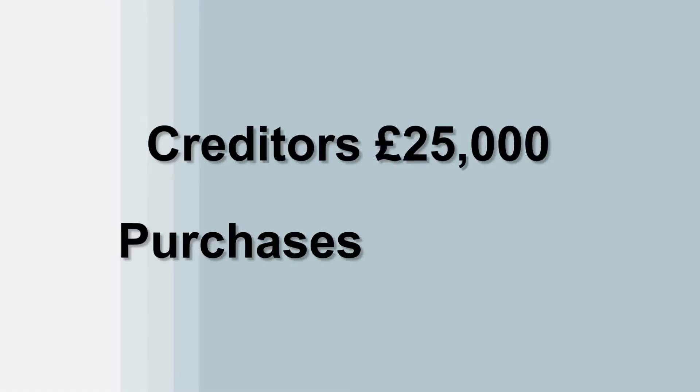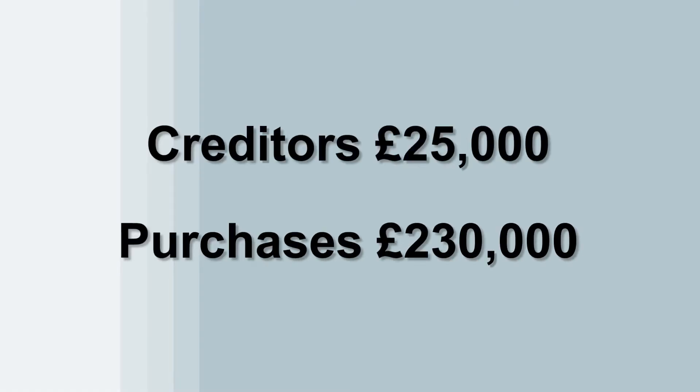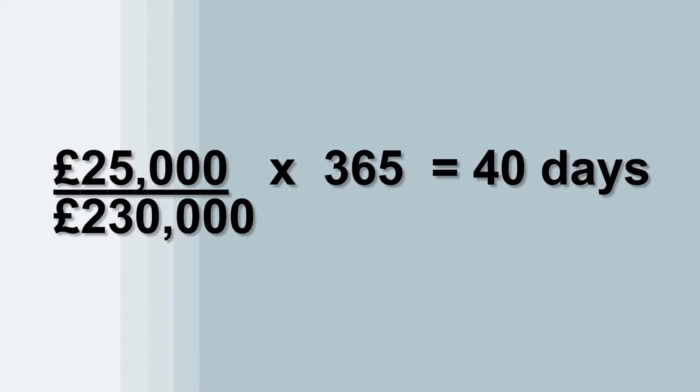But that figure on its own means nothing — we need to trend this out to see how it moves within the business. Let's do another calculation, assuming we're one year ahead. Let's say creditors are now £25,000 and purchases were £230,000. So the calculation is £25,000 divided by £230,000 times 365, which equals 40 days.